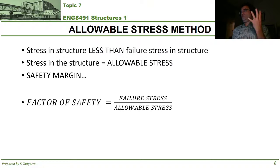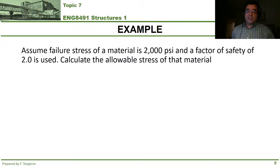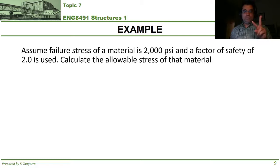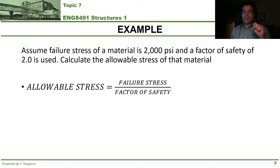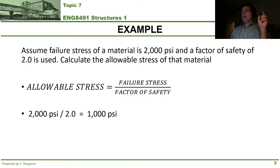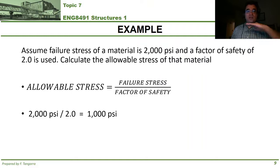Let's do a quick example using the formula: factor of safety equals failure stress divided by allowable stress. Say you're asked to calculate the allowable stress of a fictitious material — let's call it unobtainium — with a failure stress of 2000 psi, and you're told to employ a factor of safety of two. Rearranging the formula, allowable stress equals failure stress divided by factor of safety, giving 2000 psi divided by 2 equals 1000 psi. Allowable stress design is on its way out and not used in Canada, but it's worth being aware of since some still use it.